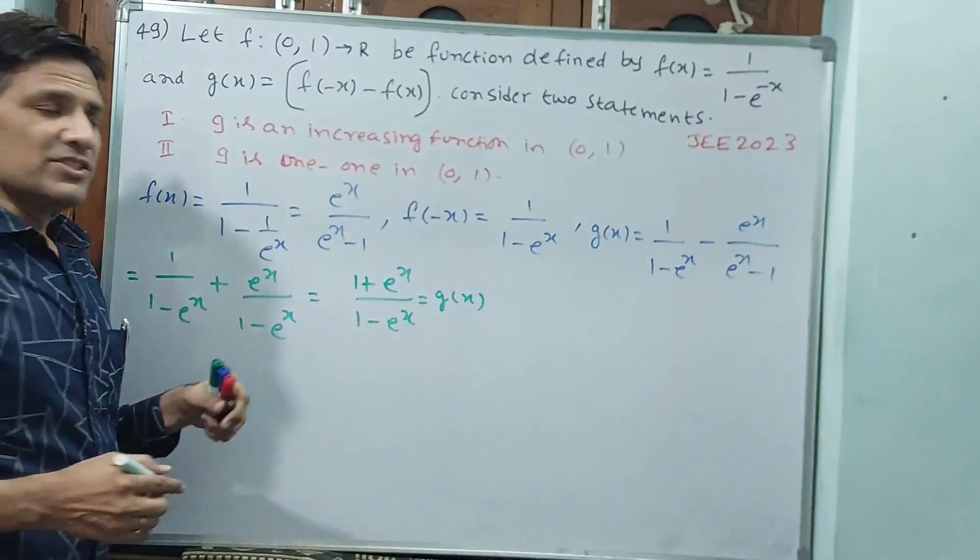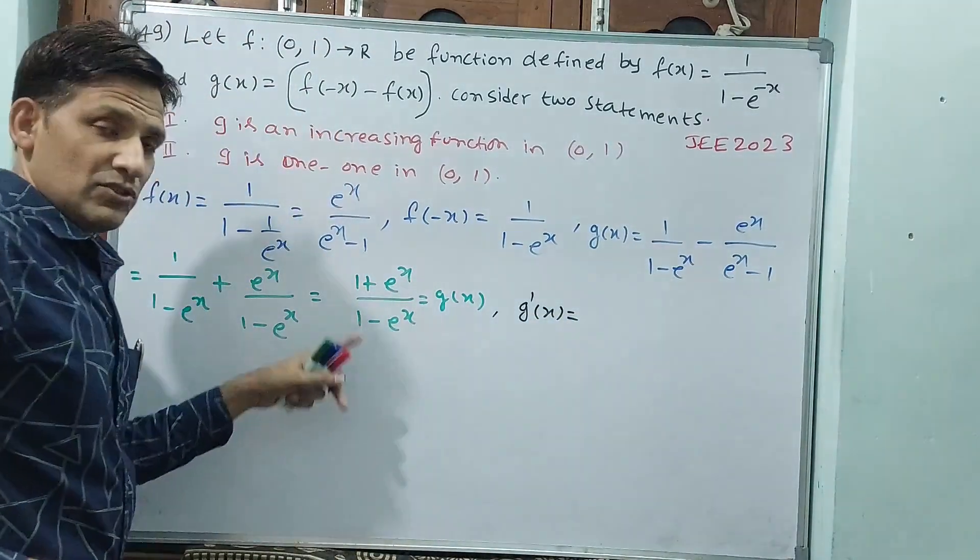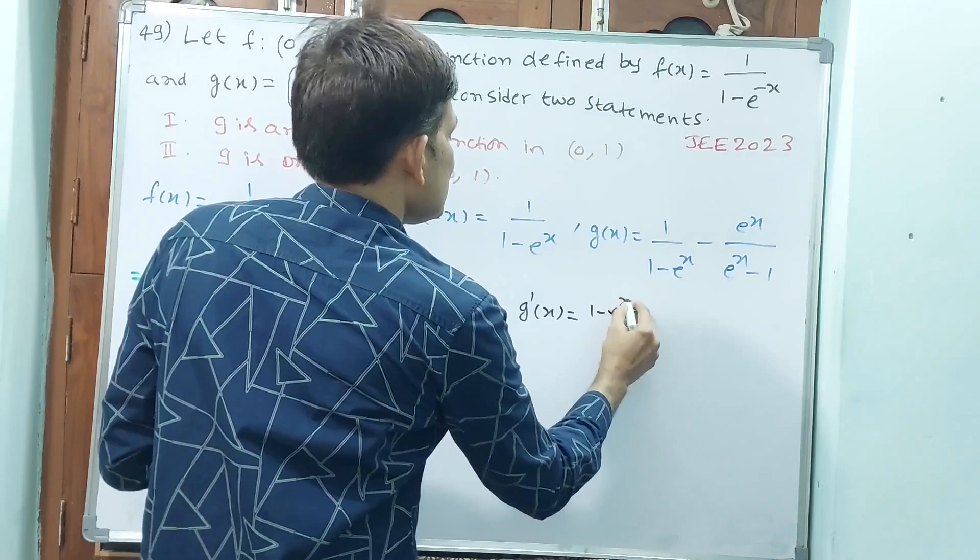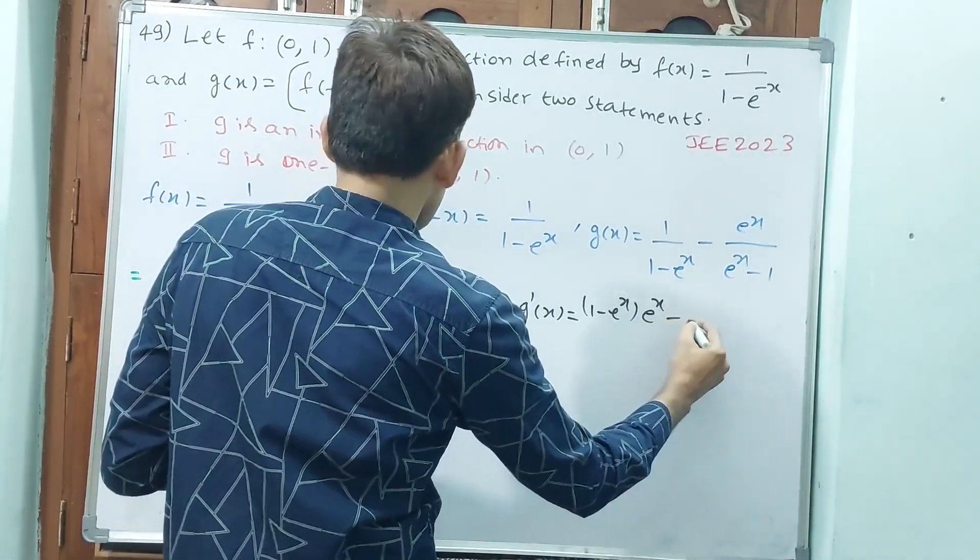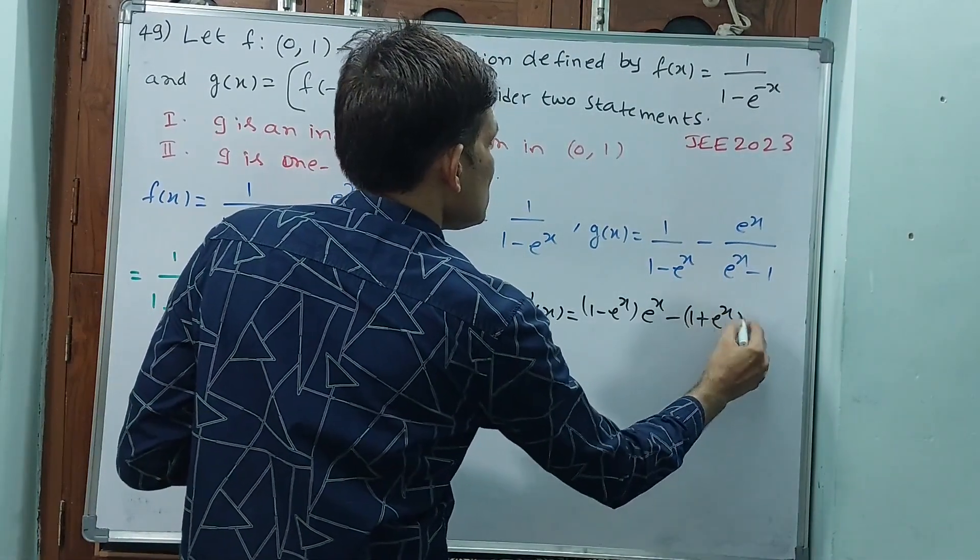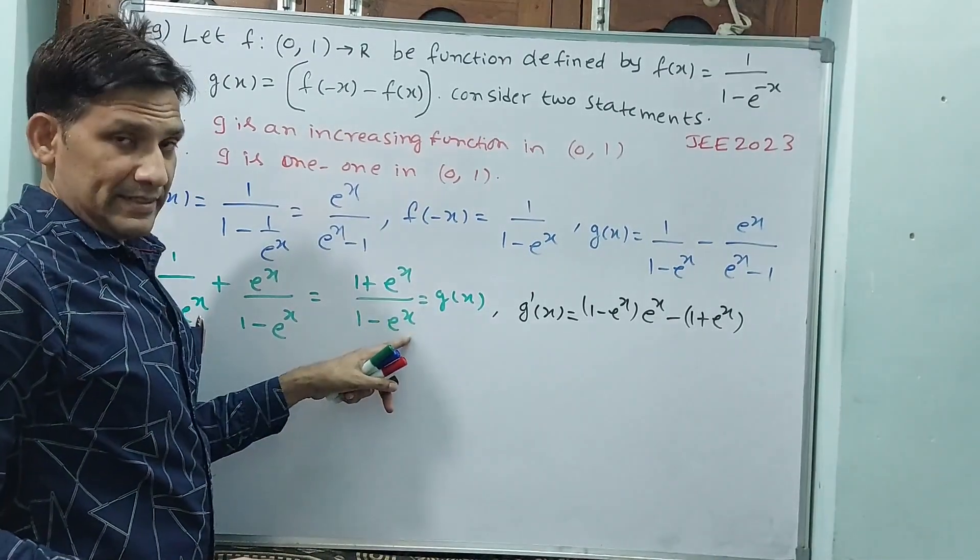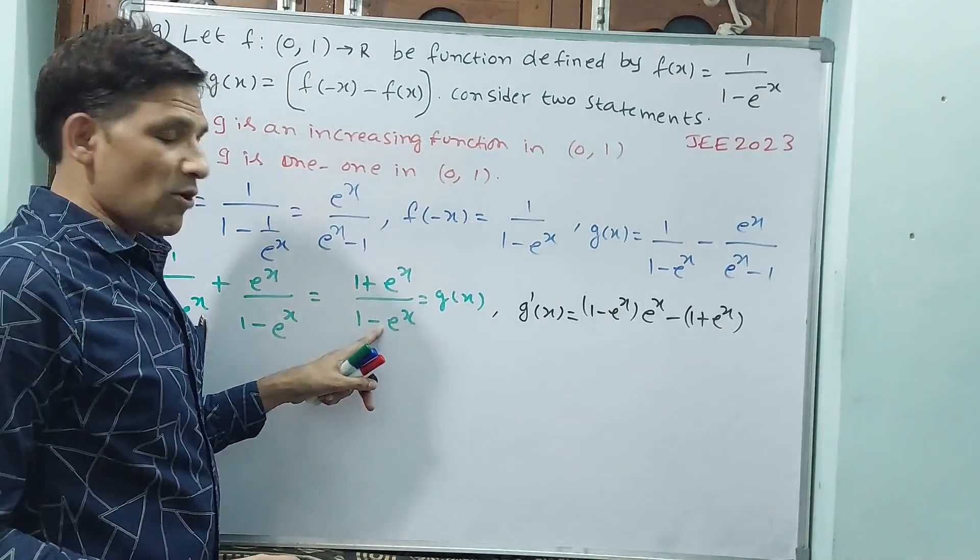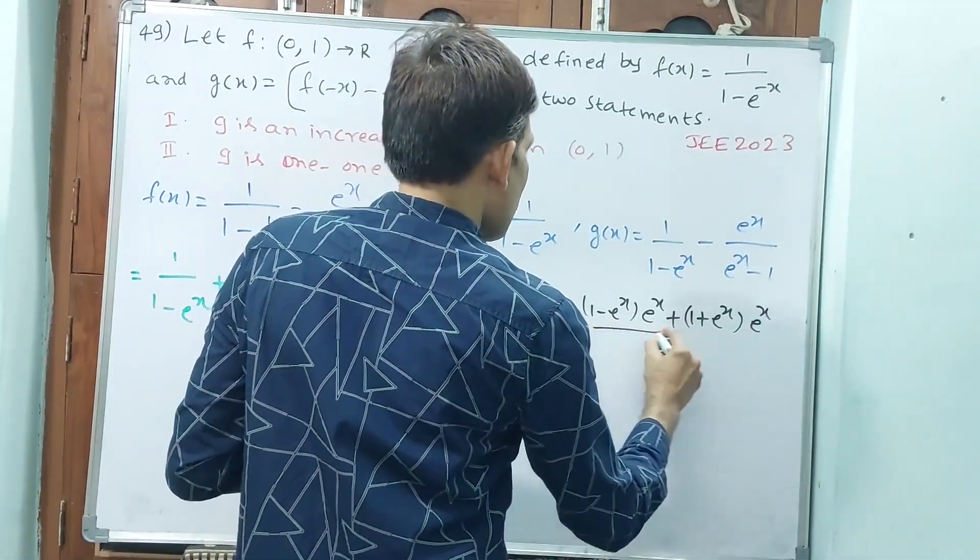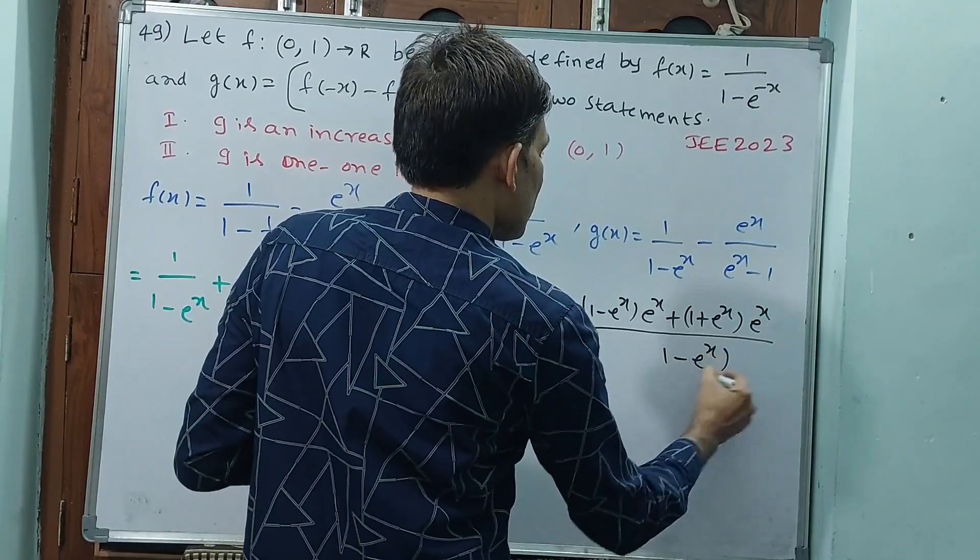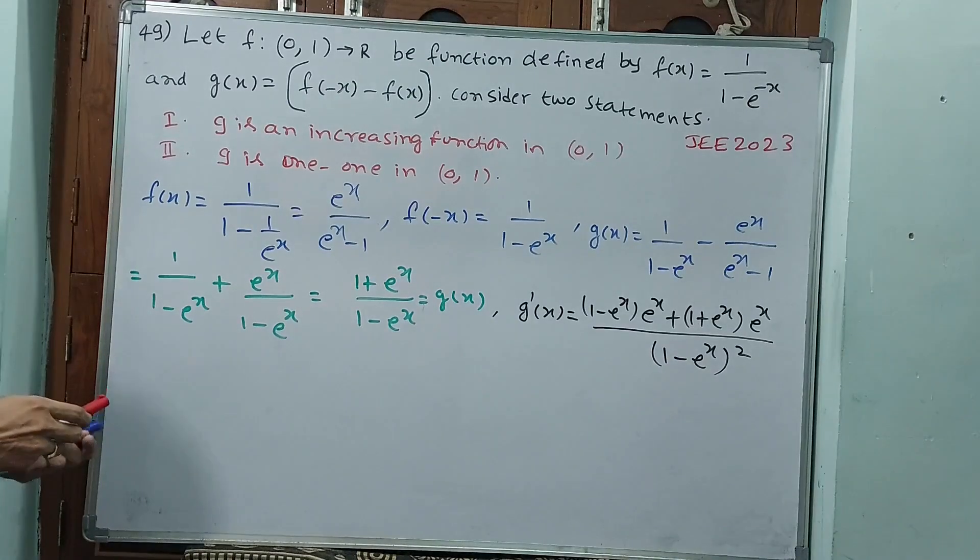How can you say it? See, you differentiate first with g'(x). g'(x), see u/v. v d/dx of u is e^x, minus u, d/dx of v is minus e^x. But outside minus e^x, that means I want to make this as plus, and e^x divided by v square: (1 - e^x)^2.